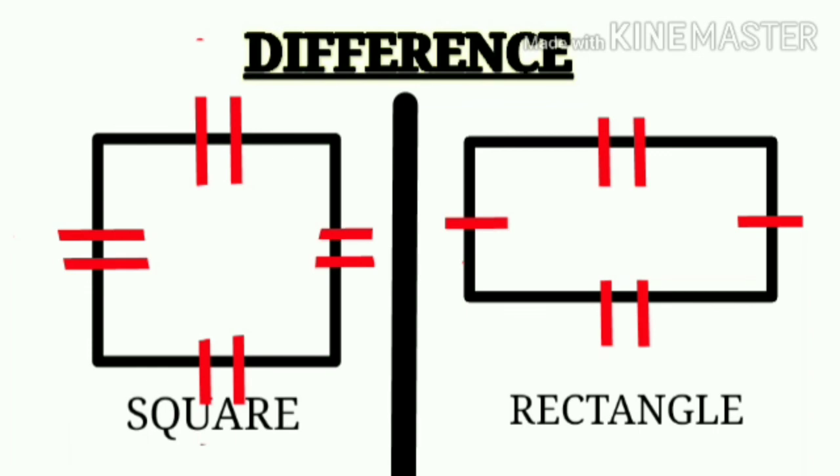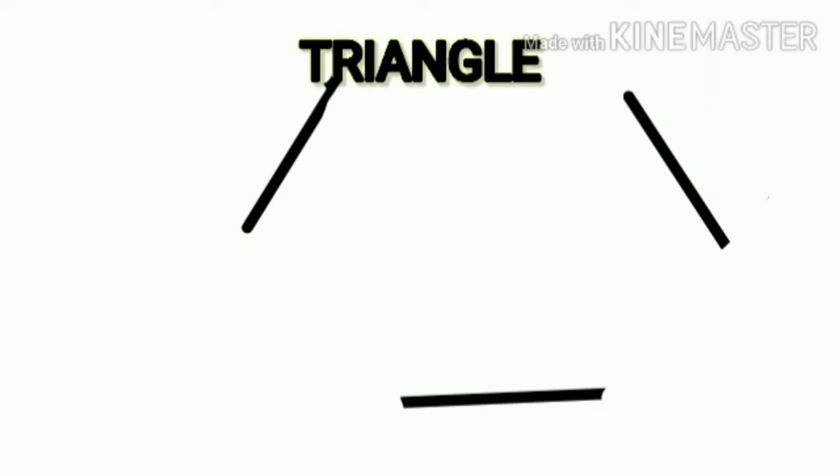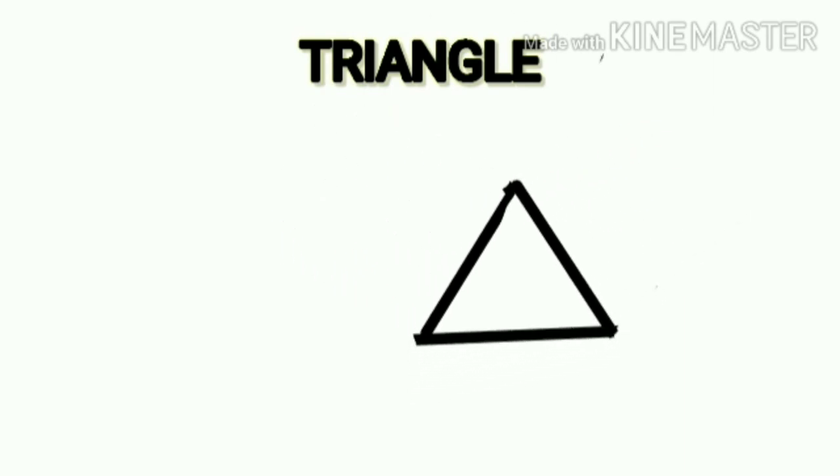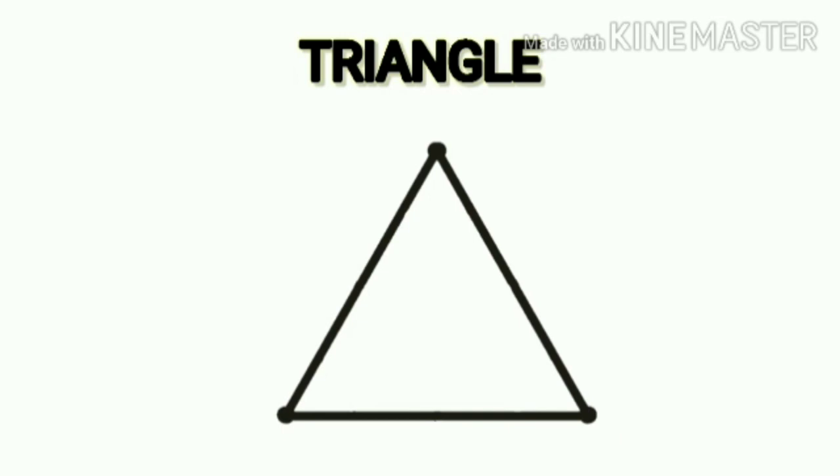Let's move to the new figure, that is triangle. A triangle has three vertices and three sides. Point Y, point R, and point L are the vertices of this triangle.